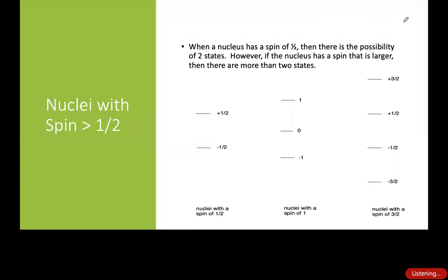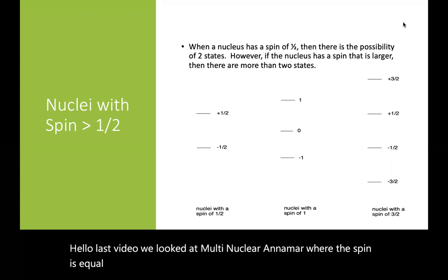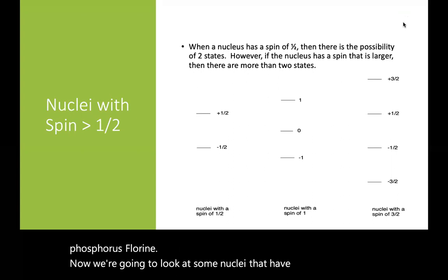Hello! In the last video, we looked at multinuclear NMR where the spin is equal to a half. So protons have a spin of a half, carbon has a spin of a half, phosphorus, fluorine. Now we're going to look at some nuclei that have a spin greater than a half.